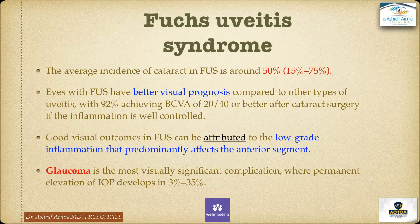Starting with Fuchs Uveitis Syndrome: the average incidence of cataract is around 50%, ranging from 15 to 75%. Eyes with Fuchs have a better visual prognosis compared to other types of uveitis, with 92% achieving a best-corrected visual acuity of 20/40 or better after cataract surgery if inflammation is well controlled. Good visual outcome can be attributed to the low-grade inflammation that predominantly affects the anterior segment. Glaucoma is the most visually significant complication, with permanent IOP elevation developing in 30–35%.